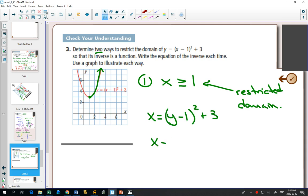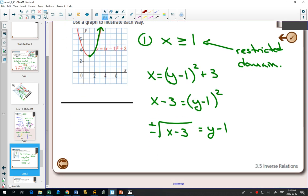So I'm going to switch the x and the y: x equals y minus 1 squared plus 3. Move the 3 over to get the squared by itself. Square root both sides, and I would get plus or minus. And so getting y by itself by adding 1 to both sides, I would have 1 plus or minus the square root of x minus 3.